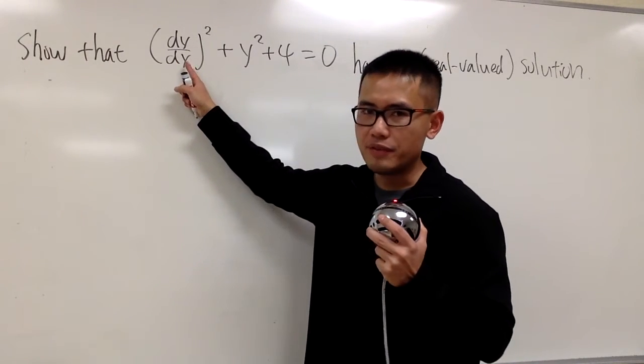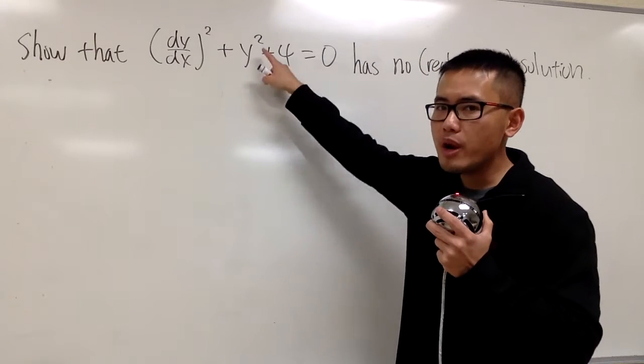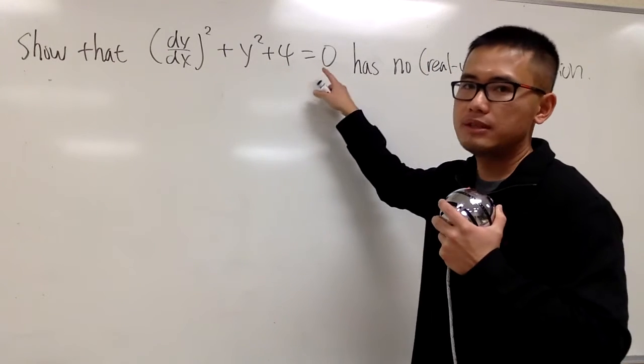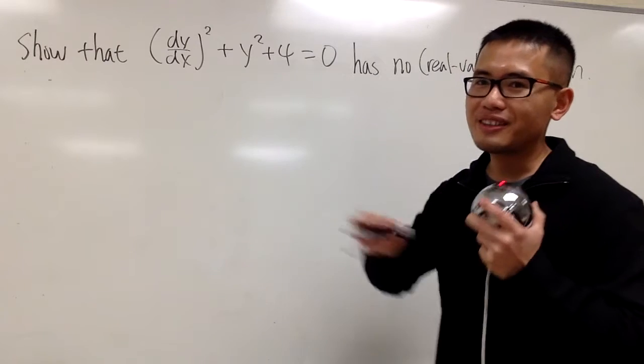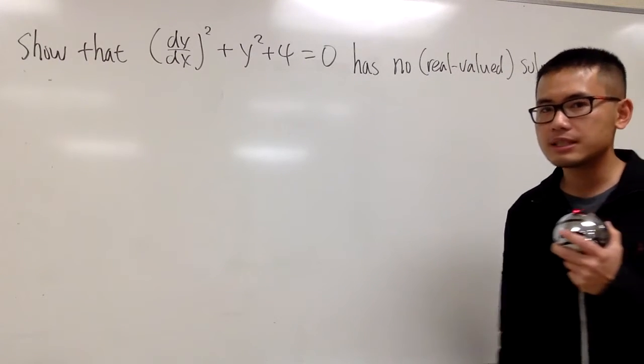Here is the first derivative and then square, and then we add it with the original. So we have the y-square, and then we add 4 to that, it's equal to 0. This right here does not have an answer to it. And this is how you're going to argue it.